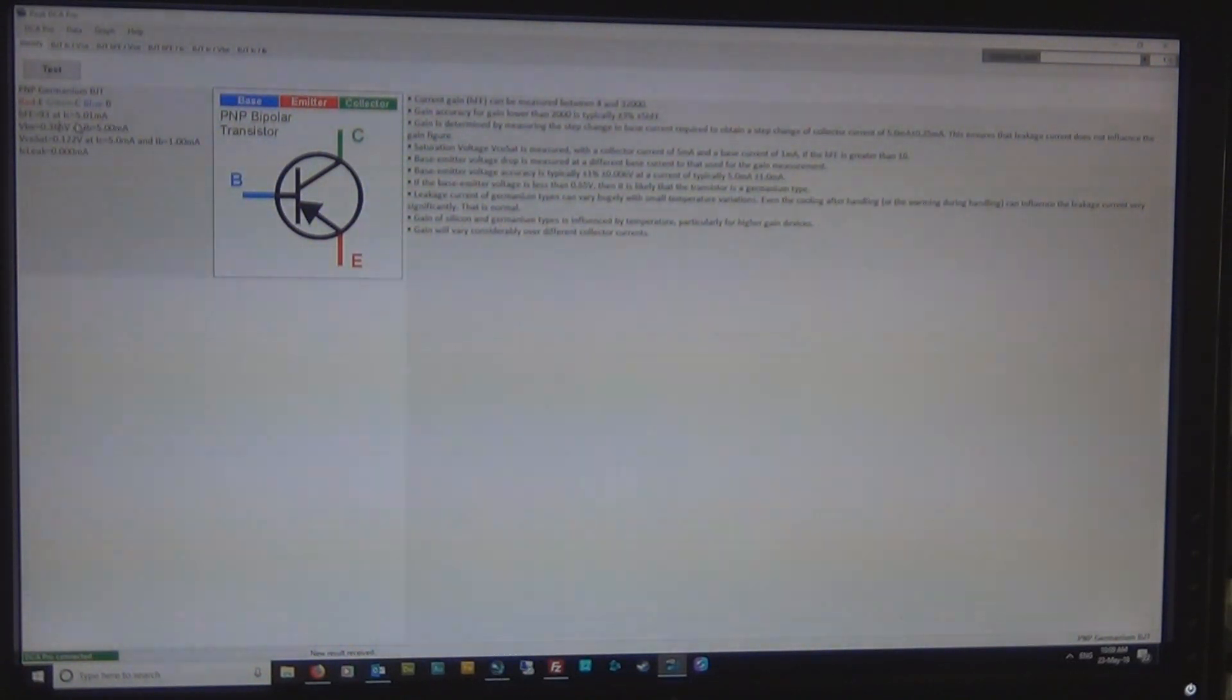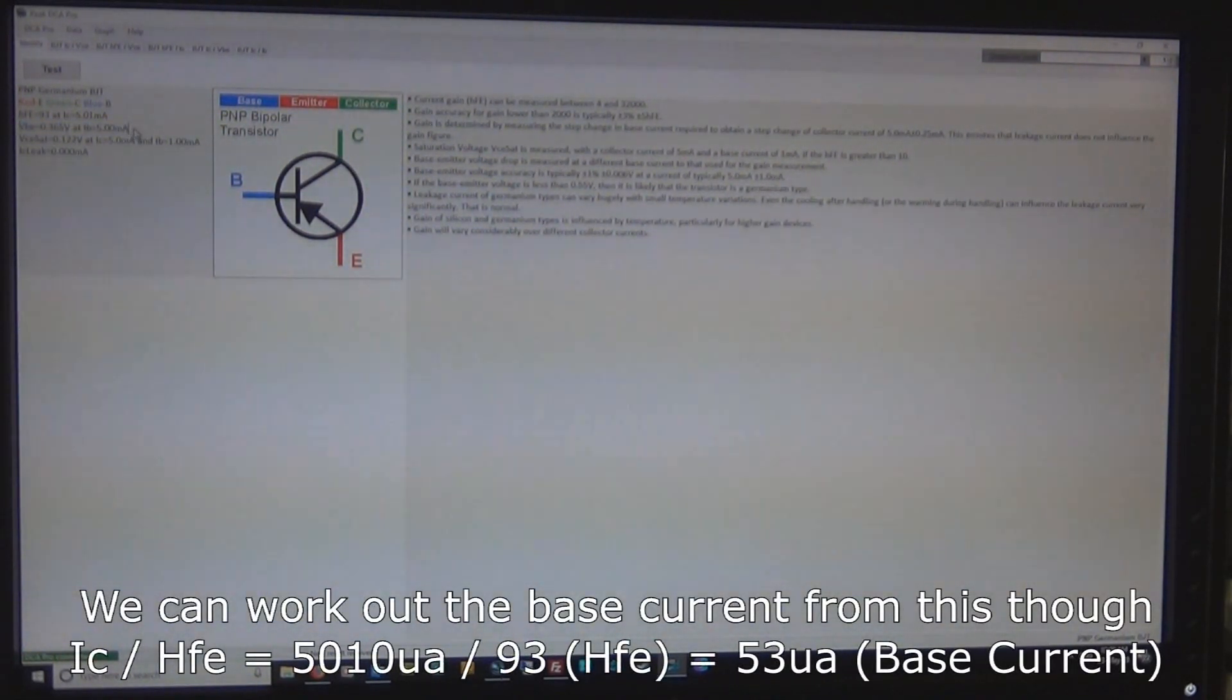And the HFE of 93 is with collector current of 5mA, so when the collector current has 5mA, the HFE is 93, that's a little backward from the way I think anyway, because it doesn't tell you what the base current is. We don't know what the base current is going into it because the DCA will just change the base current until it sees 5mA on the collector and then it will tell you what the HFE is.